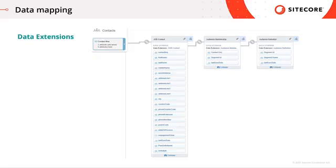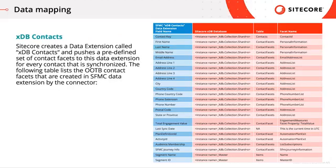We can check out the custom data extensions being created by the connector. If we go under contact builder, under data extensions, we find the XDB contact, audience membership, and audience definition custom data extensions. Sitecore creates a data extension called XDB contacts and pushes a predefined set of contact facets to this data extension for every contact that is synchronized. The following table lists all the out-of-the-box contact facets that are created connected with the data extension by the connector.